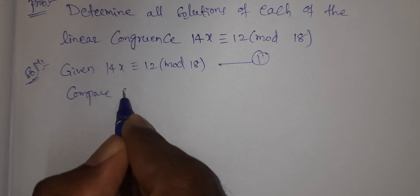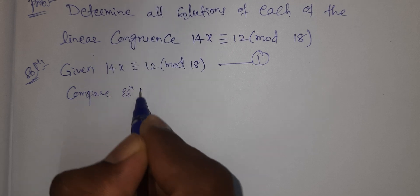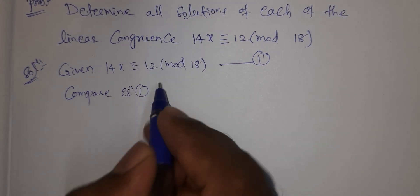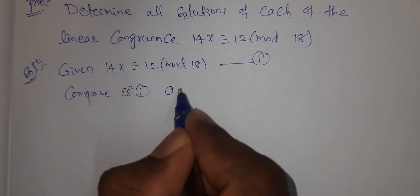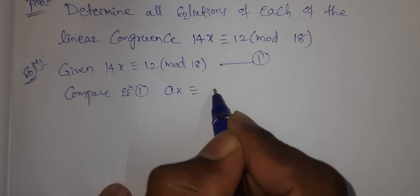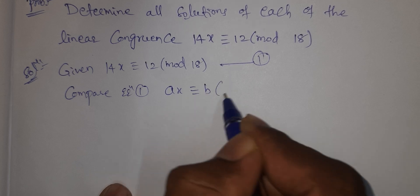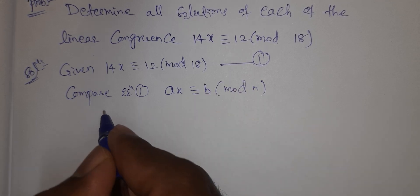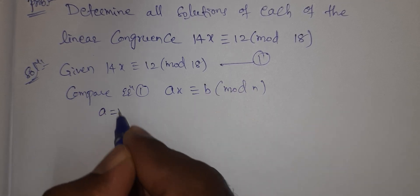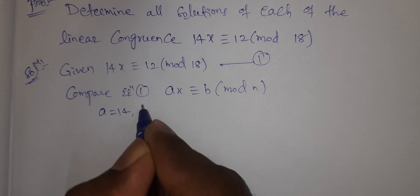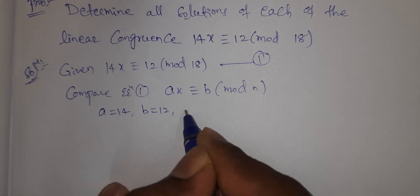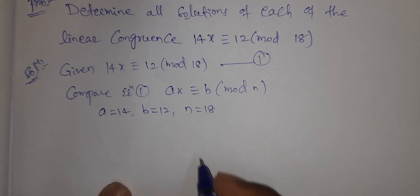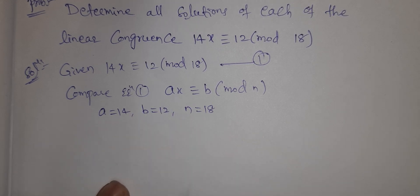Compare to equation 1: Ax ≡ b (mod n). Here, a equals 14, b equals 12, and n equals 18.